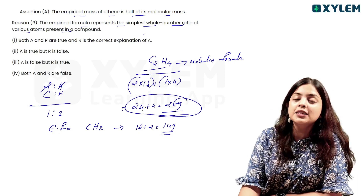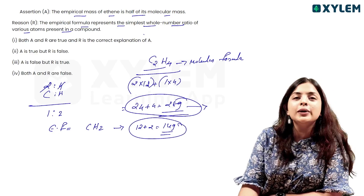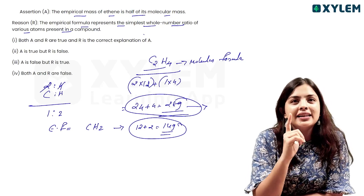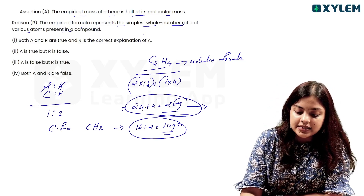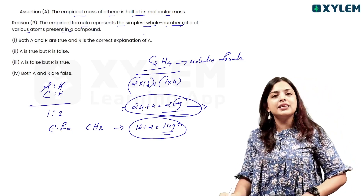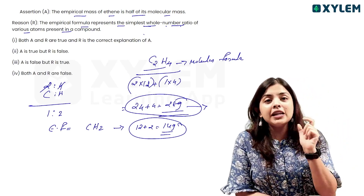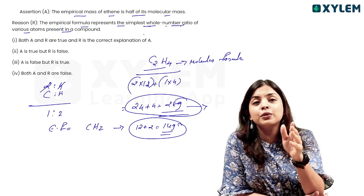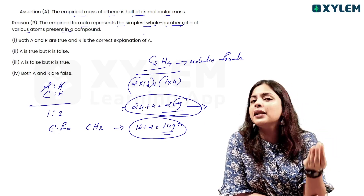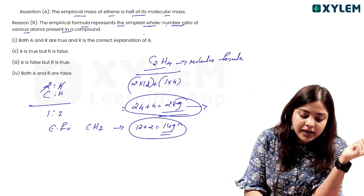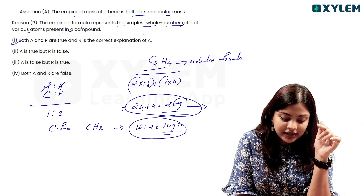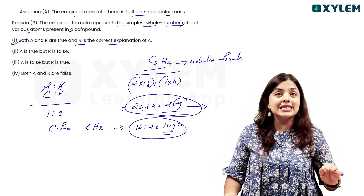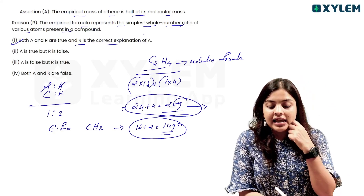The molecular mass is 28 grams and the empirical formula mass is 14 grams, so the empirical mass is indeed half of the molecular mass. The empirical formula represents the simplest whole number ratio of various atoms present in a compound. Therefore, both the assertion and the reason are true, and the reason is the correct explanation for the assertion.